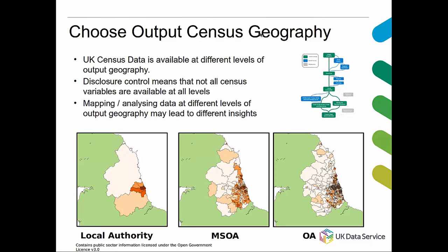You could display the same variable by local authority, by middle super output areas, or by output areas. By mapping and analyzing data at different levels you can get different insights. Patterns present at one scale may not be visible at other scales because at larger areas the data tends to get smoothed, whereas at higher resolution you might get more noise. The local authority level is good for picking up general patterns, while the output area level is much more detailed and allows you to drill into much finer detail.